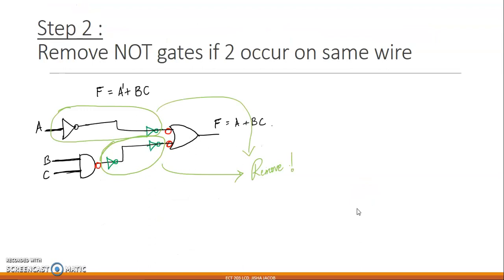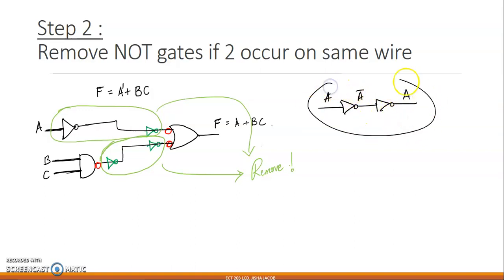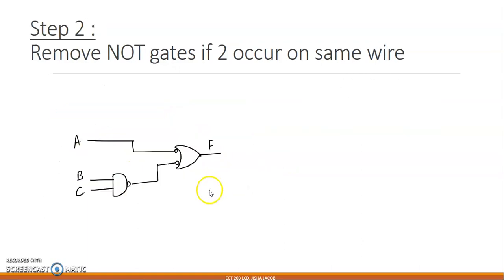In the next step, look carefully at the circuit. Wherever you see two NOT gates on the same wire, you can remove them. Because A through a NOT gate gives A̅, and A̅ through another NOT gate gives A back — therefore it has no meaning. We can remove two NOT gates if they are present on the same wire. I remove these two pairs and what we end up with is the simplified circuit.